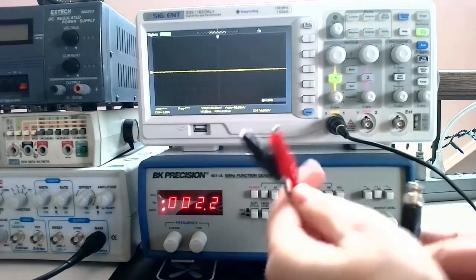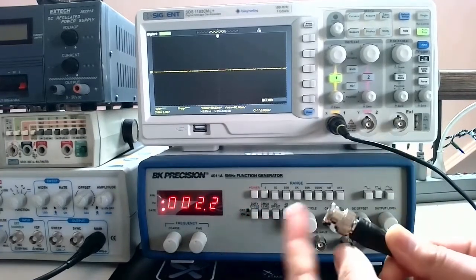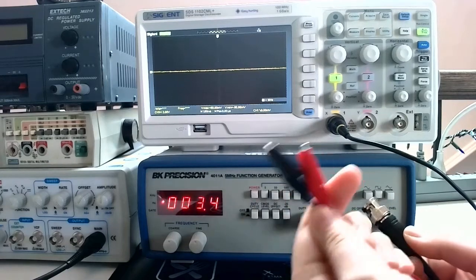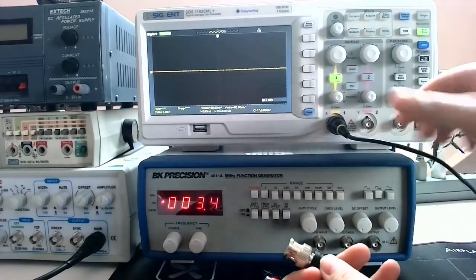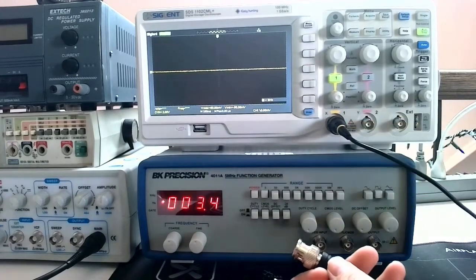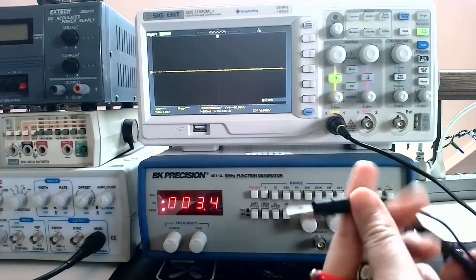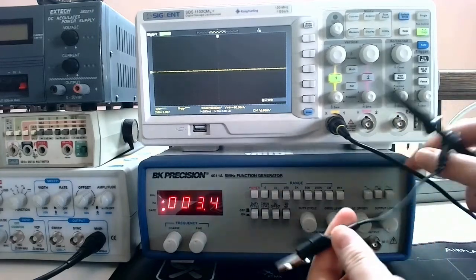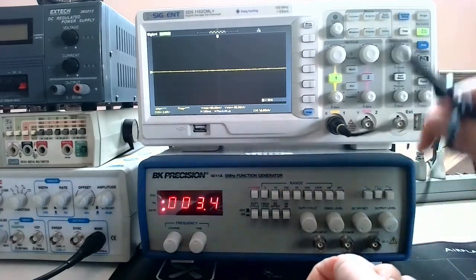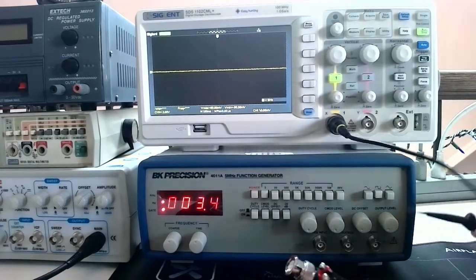The connector that we're using for the function generator has a BNC cable on one side, and notice that it is unshielded, and alligator clips on the other. The oscilloscope connection has a shielded BNC cable, and it has a probe and an alligator clip end. These are not interchangeable. This is built for the oscilloscope, this is built for the function generator, so do not change these up.